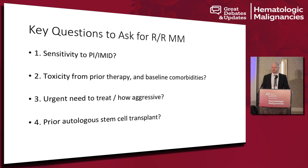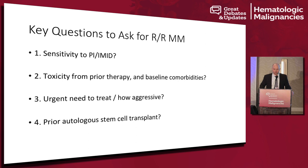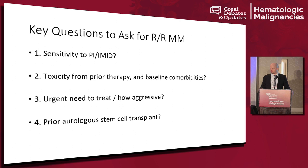The next question, which ties in with what Dr. Costello talked about with supportive care, is: what toxicities did the patient have with prior therapy? This underscores the importance of recognizing toxicities because it really plays into what you might choose for a subsequent line, as well as baseline comorbidities. As patients relapse, they're typically older. They may have comorbidities common in older adults such as congestive heart failure, coronary artery disease, or progressive type 2 diabetes. Finally: how urgently do I need to treat this patient? Is this a biochemical relapse or an overt aggressive clinical relapse? And importantly — have they had a prior autologous stem cell transplant?